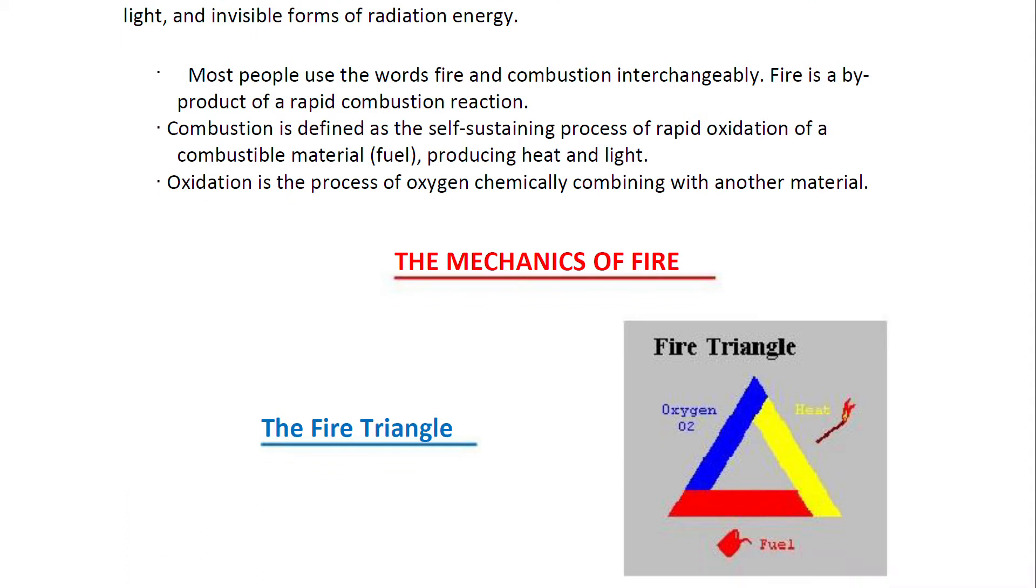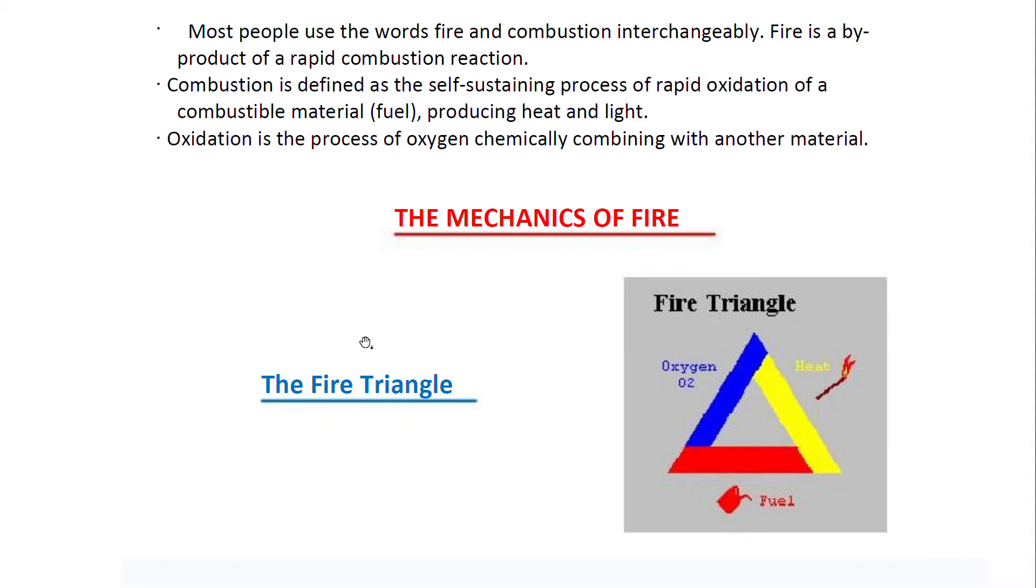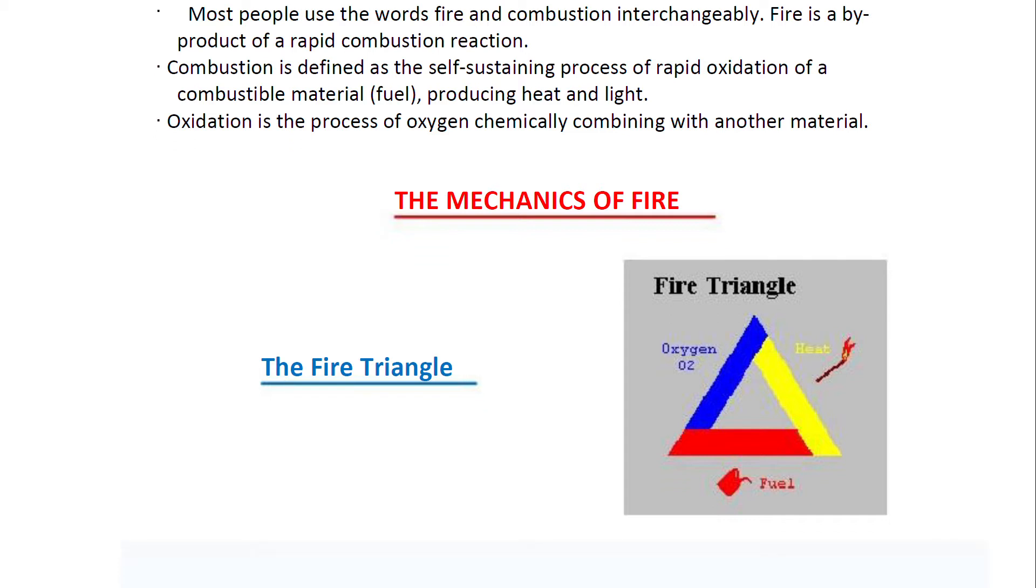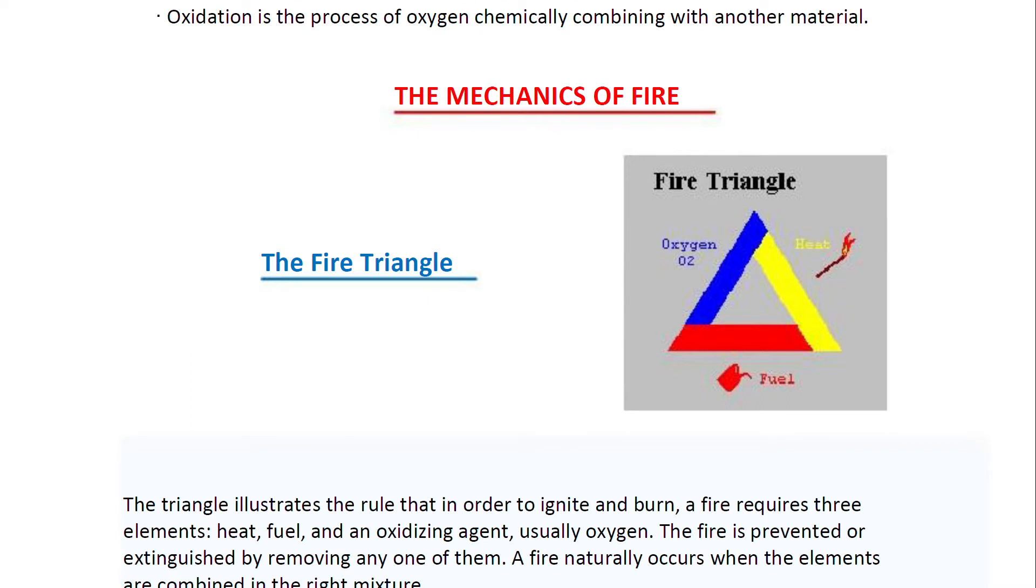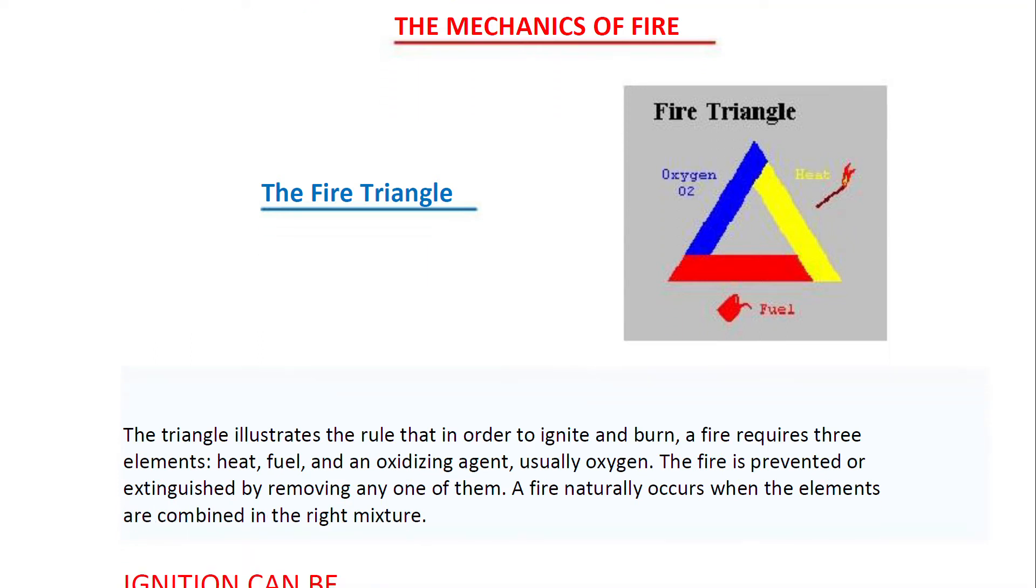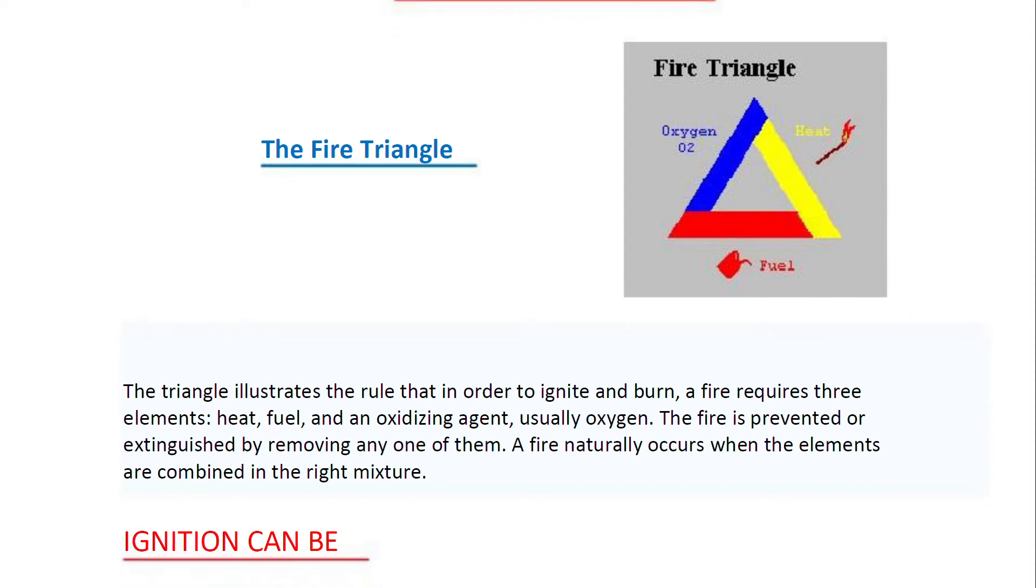Looking now at the mechanics of fire, we have the fire triangle: oxygen, heat, and fuel. The fire triangle illustrates the rule that in order to ignite and burn, a fire requires three elements: heat, fuel, and an oxidizing agent, usually oxygen. The fire is prevented or extinguished by removing any one of them. A fire naturally occurs when the elements are combined in the right mixture.